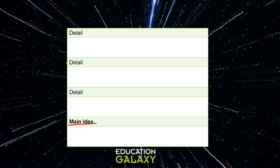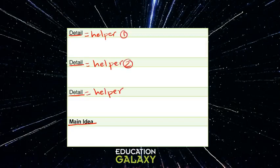But most often you have to look for important details that help you figure out the main idea. Each detail is a helper. And most likely, however many paragraphs there are, there are that many important details. When you put them together — three, for instance — you get the main idea of the passage.